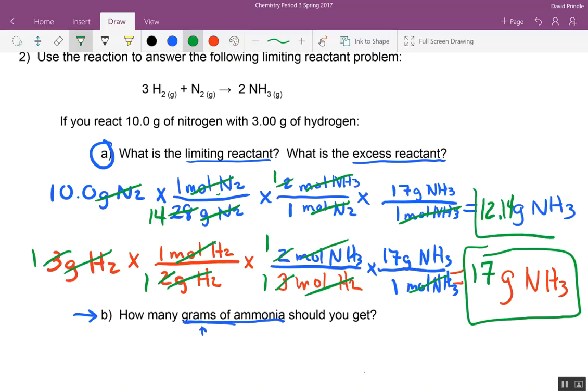Now which one is the limiting reactant? Which one do we make the least of? Which one? Nitrogen. Now here's the question. How many grams of ammonia should I get or should you get? What's the most we can make here with what we have? Yep. 12.14. Once the nitrogen's gone we can't make more than 12.14 grams of NH3. The limiting reactant will answer the next question. How many grams should you get? 12.14.